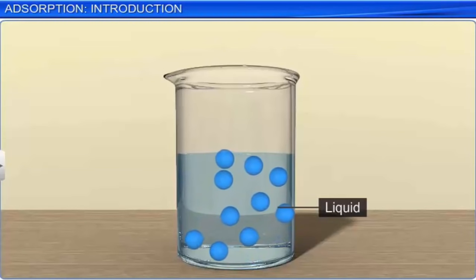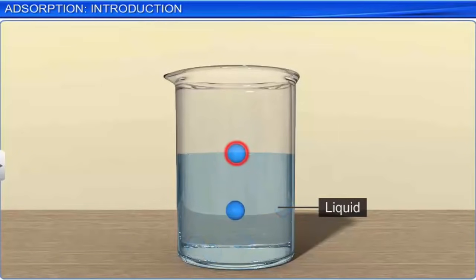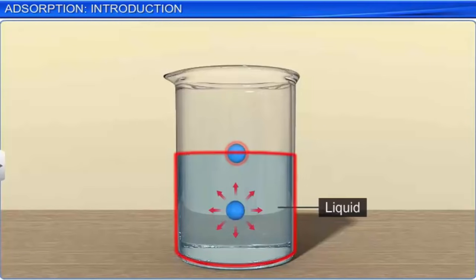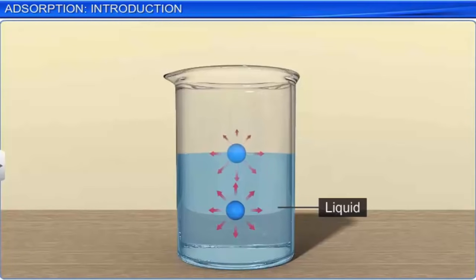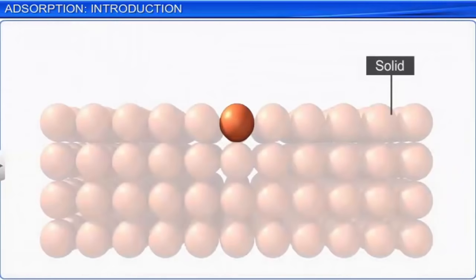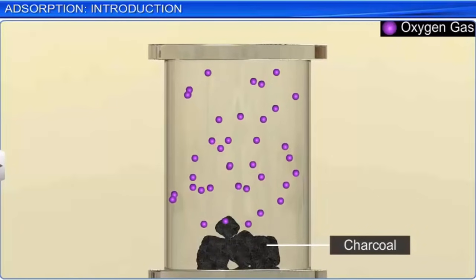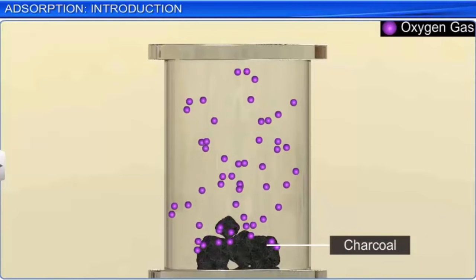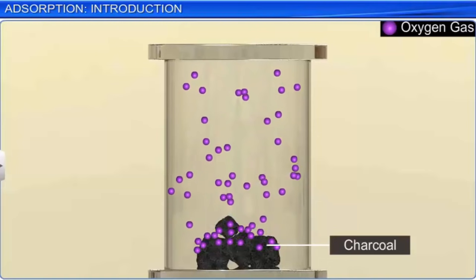Consider two molecules, one present in the bulk and the other on the surface of the liquid phase. The molecule in the bulk experiences a balanced force of attraction from all directions. However, the molecule on the surface is surrounded by liquid molecules of the same phase and also by fewer molecules from the gaseous phase. As a result, the molecule lying at the surface experiences an unbalanced force or some net inward force of attraction. Similar inward forces of attraction exist at the surface of solids. If you put solid charcoal in a closed vessel containing oxygen, oxygen molecules are attracted to the solid surface of charcoal, increasing the concentration of the gas on the surface.